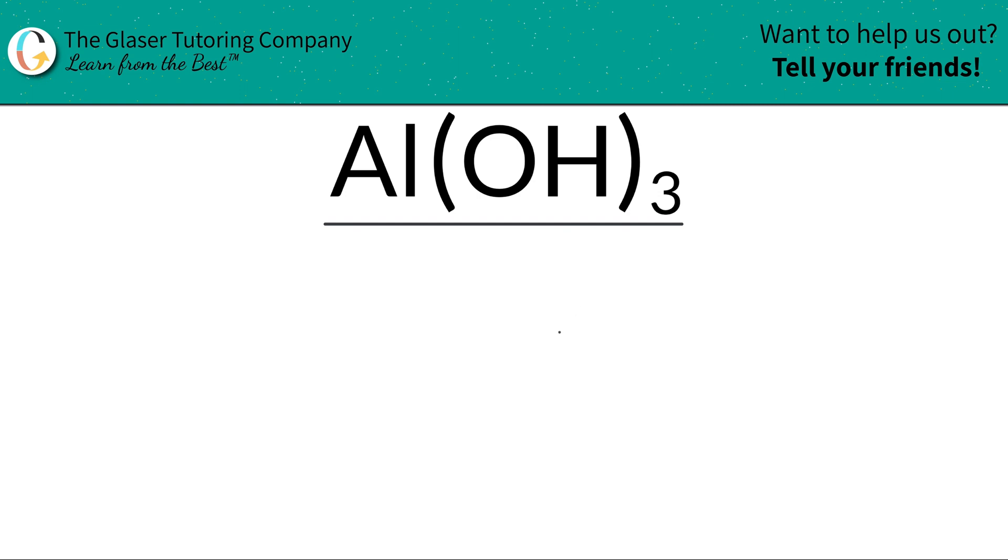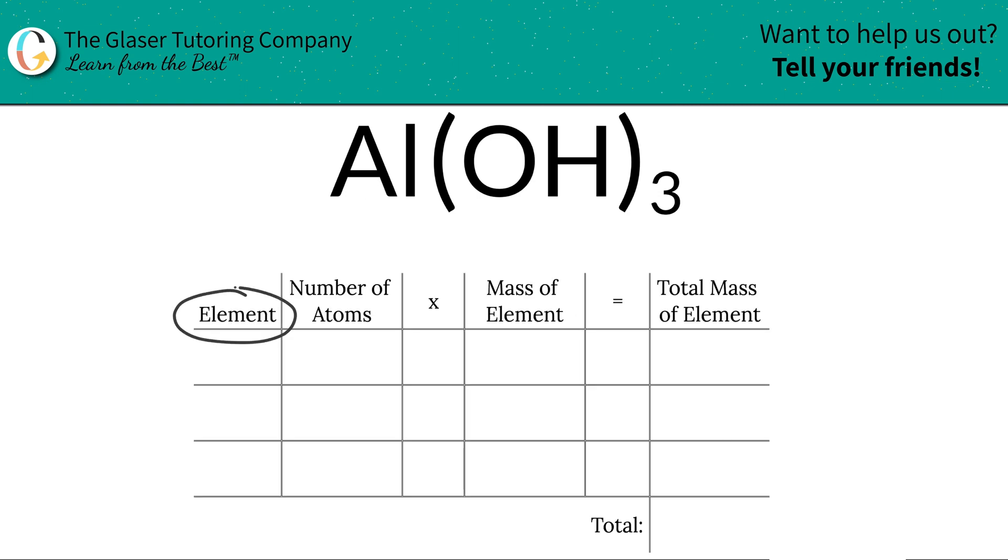And I'm going to use this table to help me organize my thoughts. So the first thing I'm going to do is write down the elements in the compound. So I have aluminum, I have oxygen, and I have hydrogen.